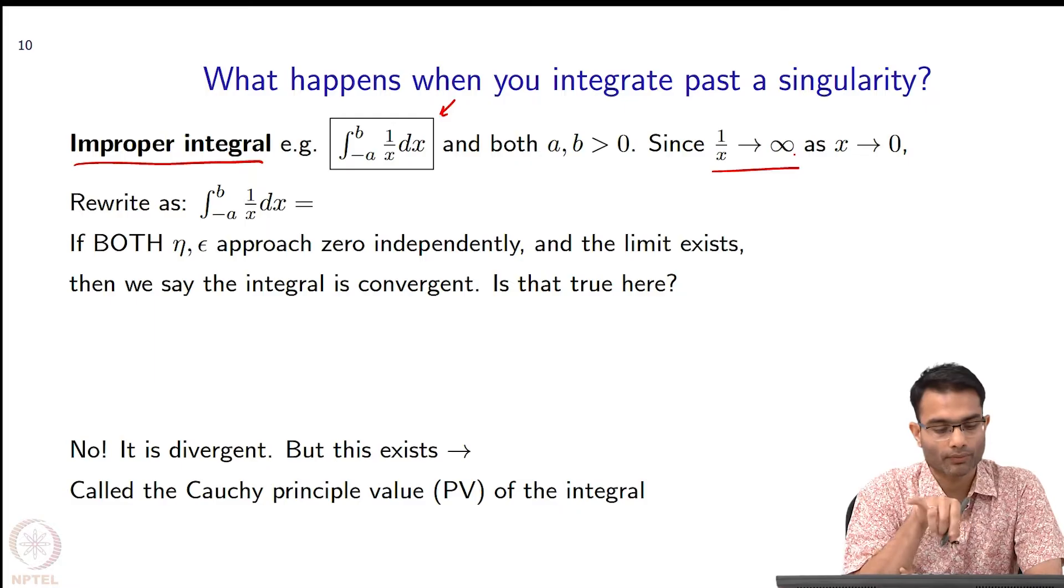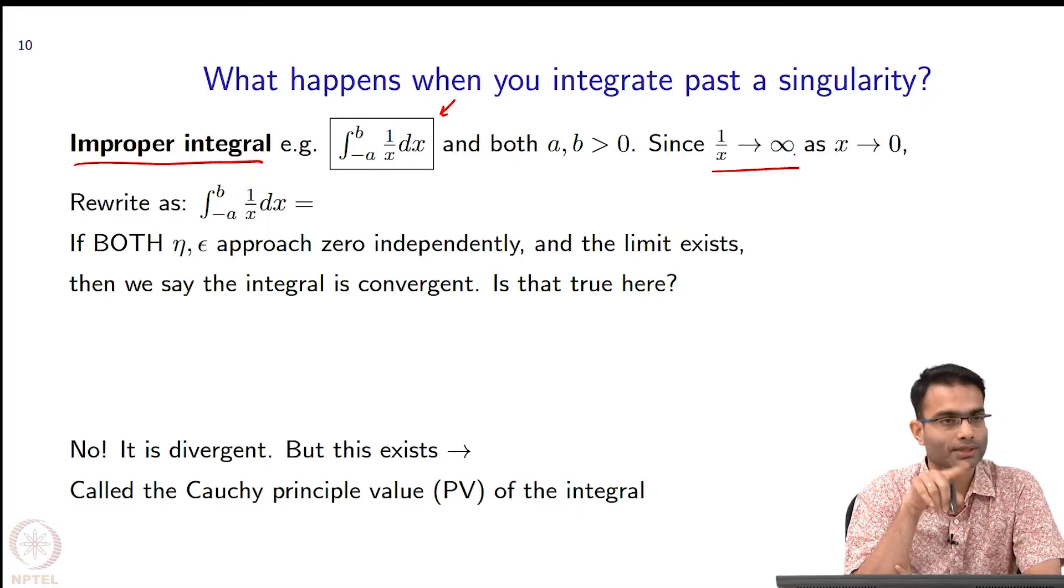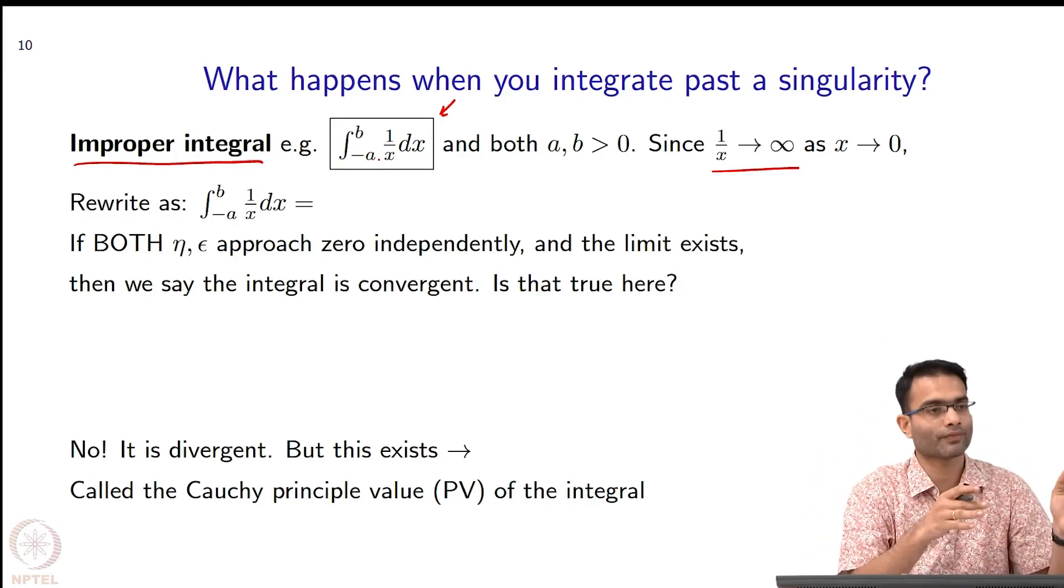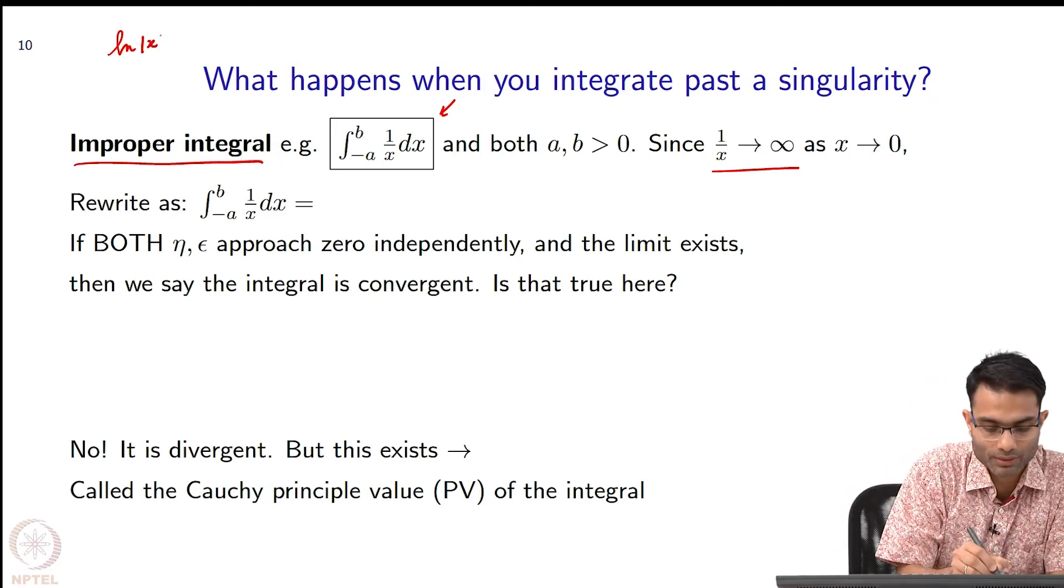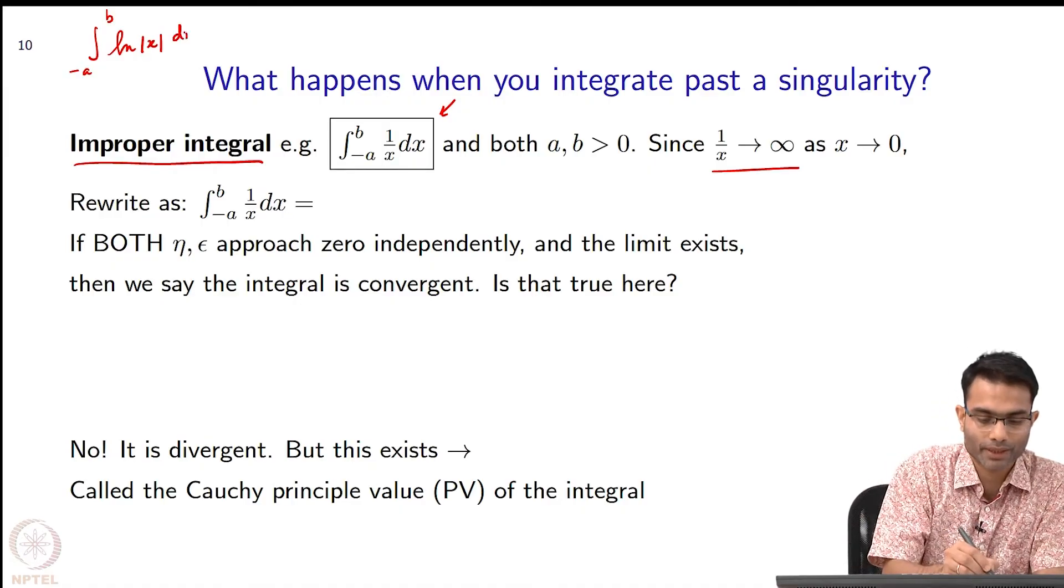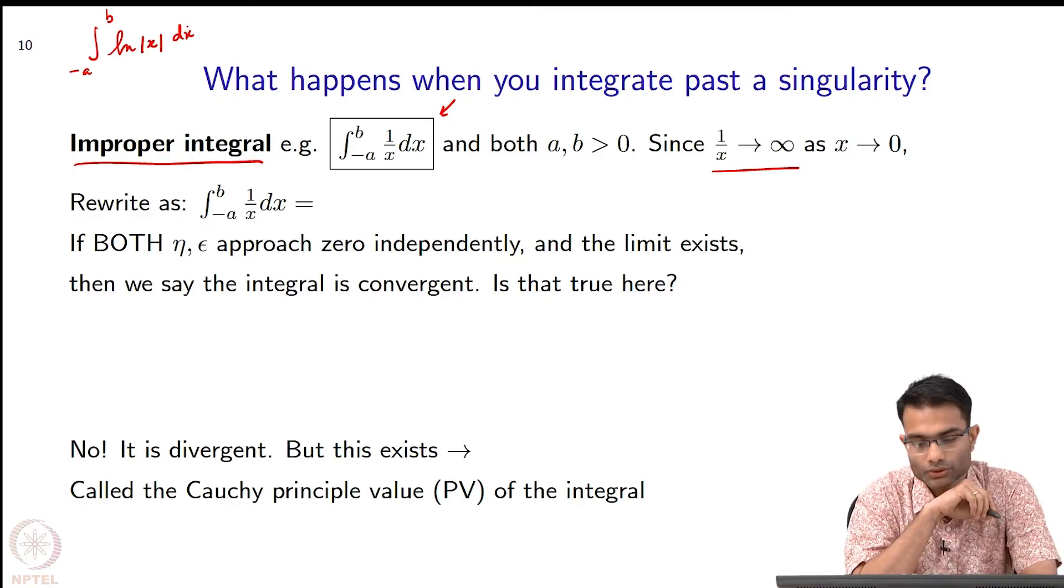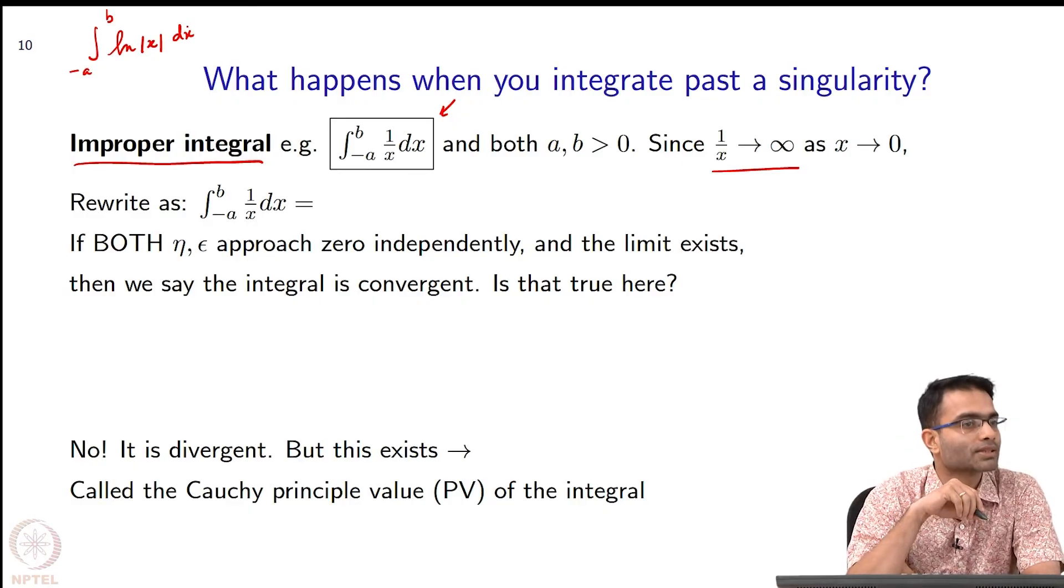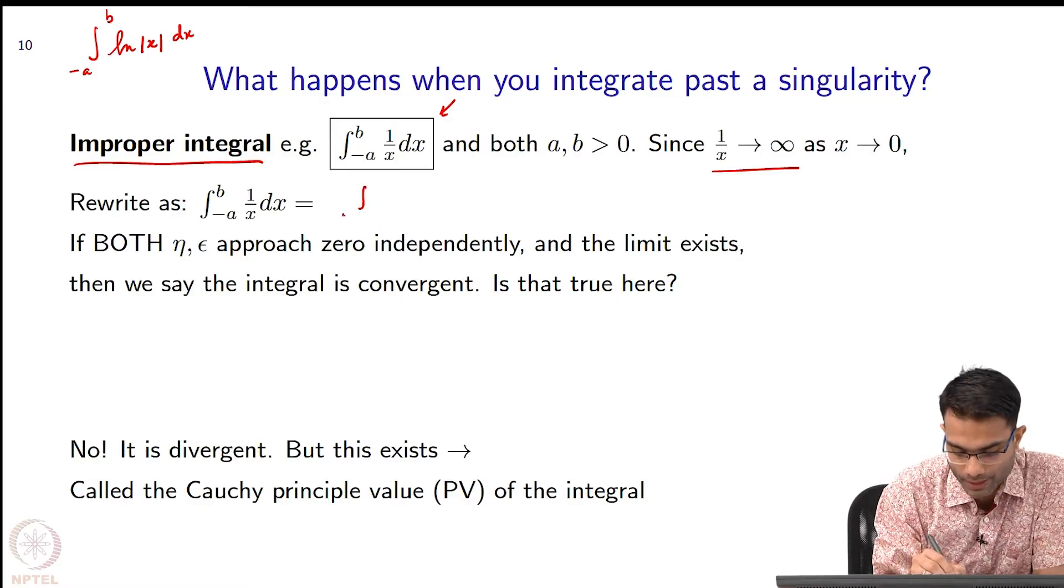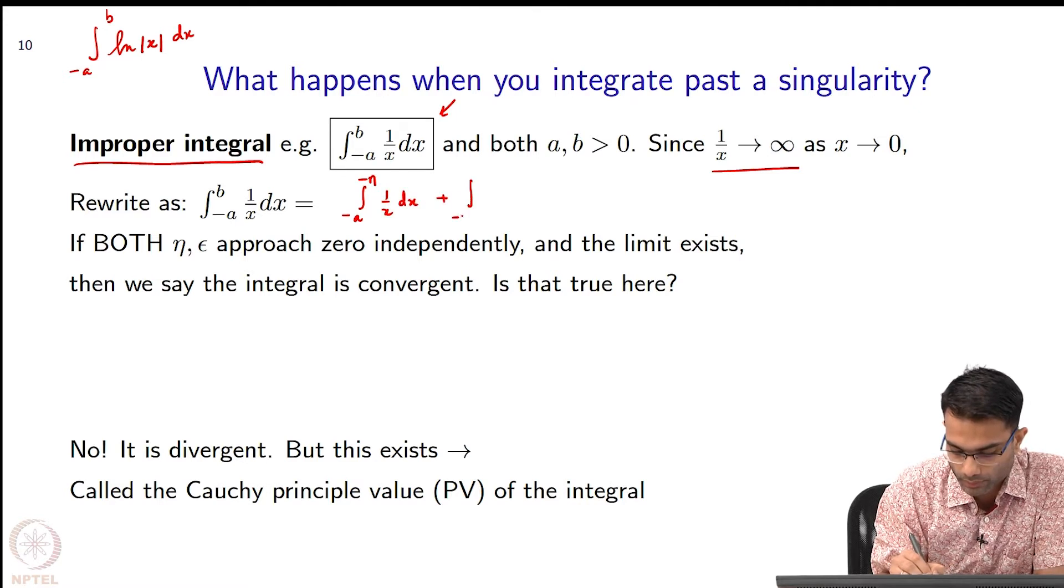What I showed you previously, both were improper integrals because both log x and 1 over x they were blowing up. Do not worry much about the limits over here. Previously I was going from epsilon to a, but I may as well have written the previous example as log of mod x and gone from minus a to b. The same thing would happen - I would break it up into two parts.